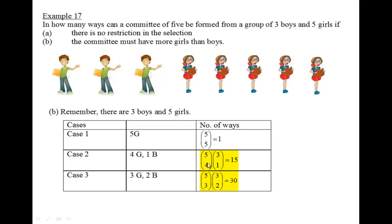Case 3: Three girls, two boys. The same idea - five girls, I choose three of them first, and the remaining two vacancies in the committee, among the three boys, I'm going to choose two of them. That's why we have 3 choose 2. So we multiply together, this gives us 30. And finally, the number of ways to form this committee with more girls than boys would be the sum of all these three values, giving us 46.